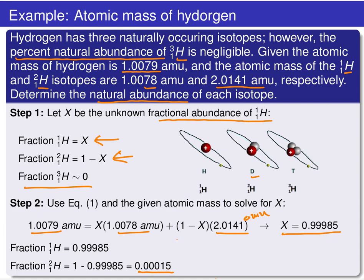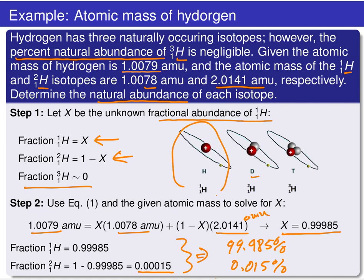Converting these into percent abundances: hydrogen-1 is 99.985% and deuterium is 0.015%. You can see that hydrogen is largely comprised of that isotope with zero neutrons.